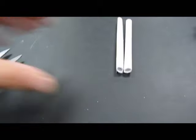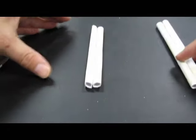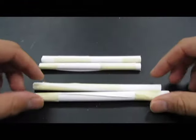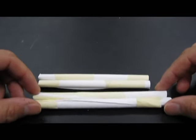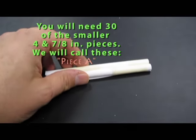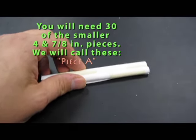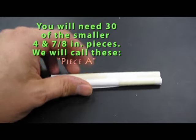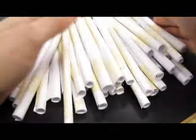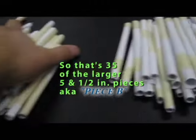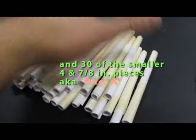So, let's look at the size difference. You've got your 4 and 7 eighths inch pieces, and then you also have your 5 and a half inch pieces right here. So, you will need 30 4 and 7 eighths inch pieces. You're going to need 30 of the smaller ones that are 4 and 7 eighths inches, and then you're going to need 35 of those. So, you've got 35 5 and a half inch pieces, and 30 4 and 7 eighths inch pieces.